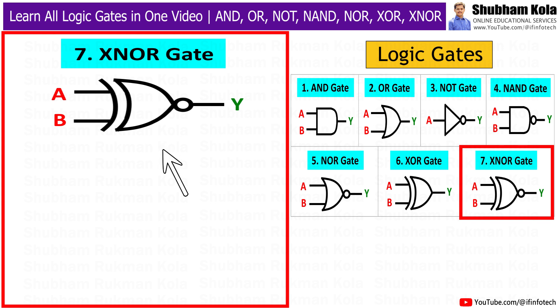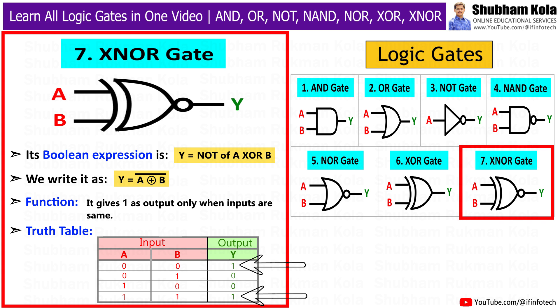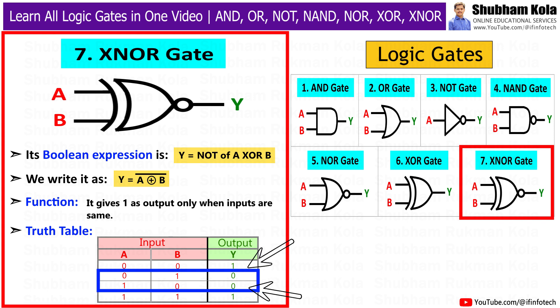The last gate is the XNOR gate, also called the Exclusive NOR gate. It is the opposite of XOR. Its Boolean expression is y = NOT (A XOR B), written as y = A XOR B bar. It gives 1 as output only when the inputs are the same. It looks like an XOR gate with a small circle at the output. In the truth table, if both A and B are 0 or both are 1, the output is 1; if inputs are different, the output is 0.